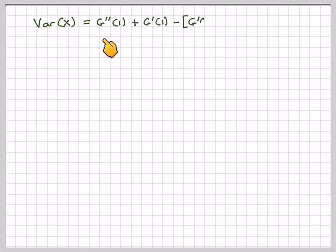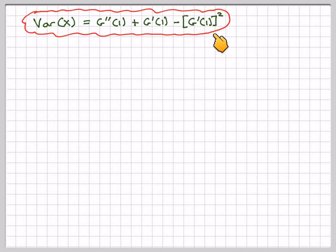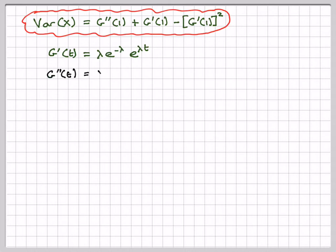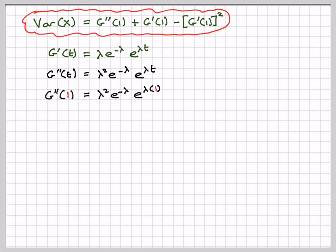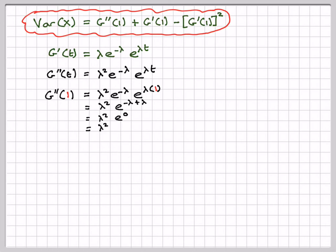To find the variance of X, we use Var(X) equals g''(1) plus g'(1) minus [g'(1)] squared. We already have g'(t) equals λ e to the minus λ times e to the λt. Differentiating again: g''(t) equals λ squared times e to the minus λ times e to the λt. So g''(1) equals λ squared times e to the minus λ plus λ, which equals λ squared times e to the 0, giving λ squared. Substituting in: Var(X) equals λ squared plus λ minus λ squared, which gives λ.